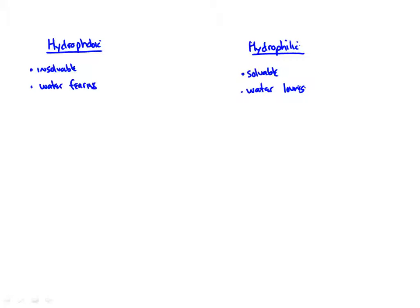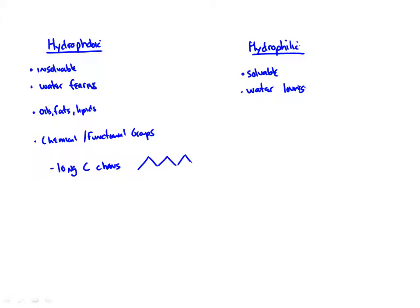What sorts of things are hydrophobic? Things like oils, fats, and obviously lipids. But from a chemistry perspective, what functional groups are hydrophobic? Long chains of carbon are hydrophobic — anything primarily composed of carbon-carbon single, double, or triple bonds tends to be hydrophobic.